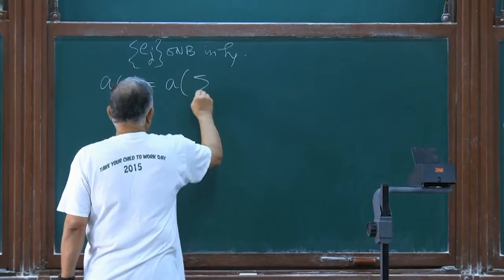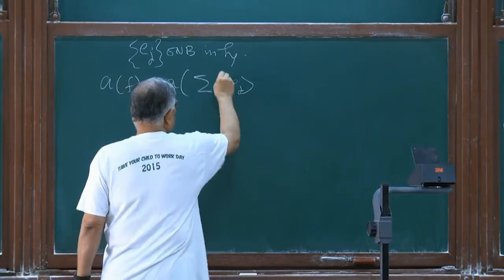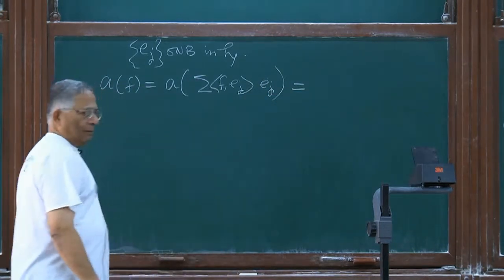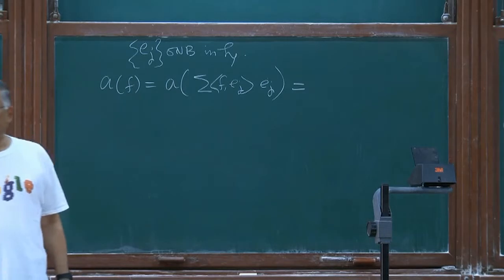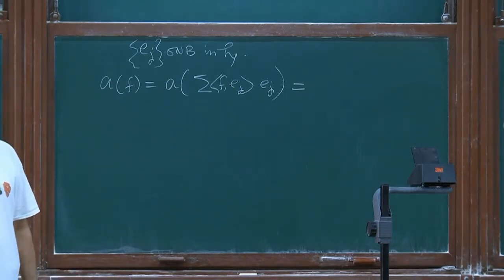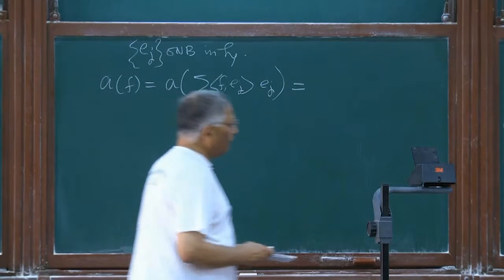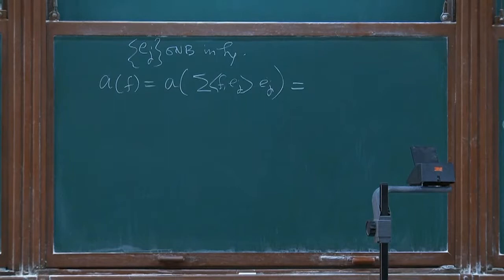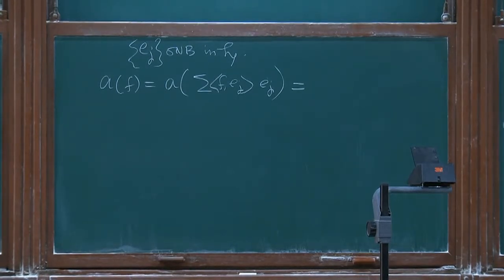I can rewrite these things by linearity or anti-linearity as the case may be. You expand the vector F in terms of its Fourier coefficients. You can compute that this is equal to that. You are defining it like that. Because first you show that this defines a one-parameter unitary group on the Fock space. Therefore by Stone's theorem it has a generator — self-adjoint — and that you call lambda H. For every H you will find a lambda H.